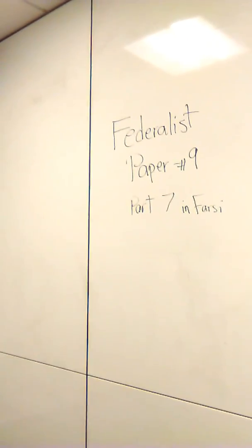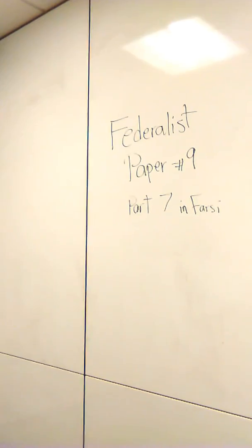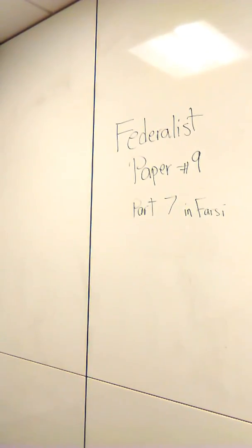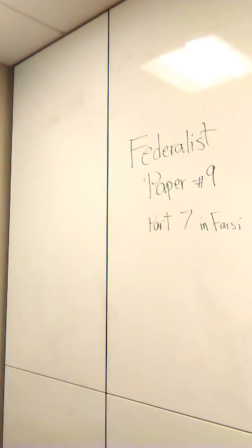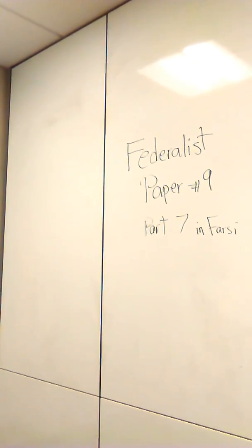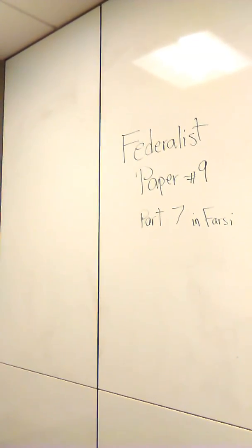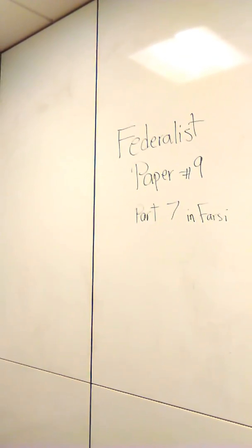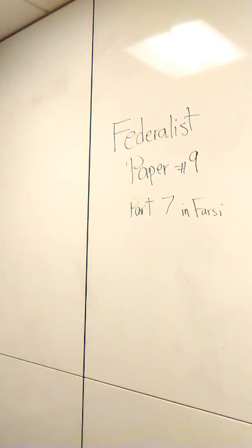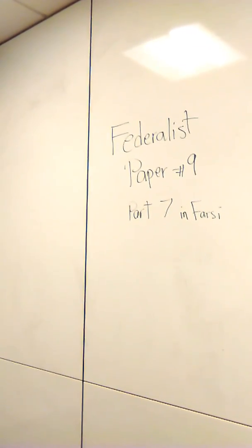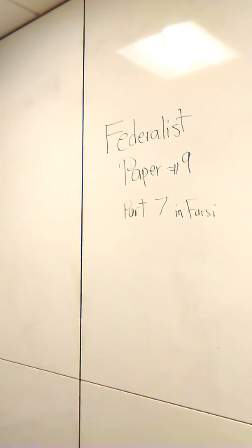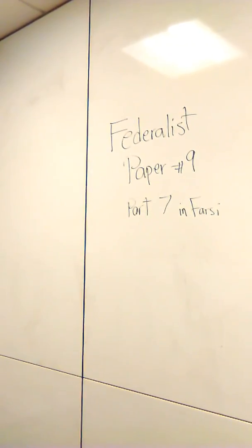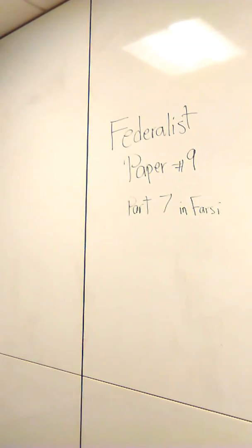The definition of a confederal republic seems to be an assemblage of societies or an association of two or more states into one state. میگه این confederacy که شما میگید assemblage چند تا استیشنی، چند تا ایالت اومدن با همدیگه فقط جمع شدن، نه اومدن با همدیگه متحد بشن. The extent, modification, and objects of federal authority are mere matters of discretion.